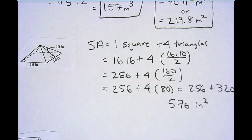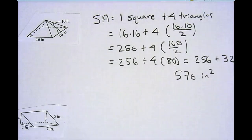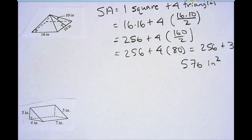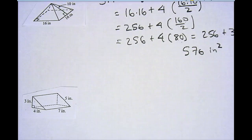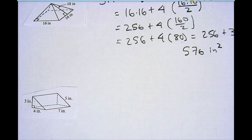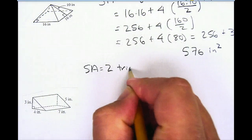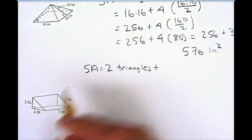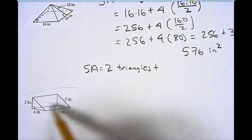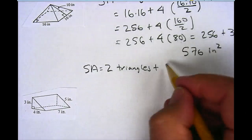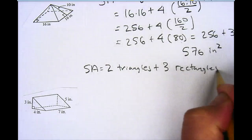I have one last shape to work on, and this shape is going to be a triangular prism. There's my triangular prism right there. There are two formulas for this. On a triangular prism, the base is going to be a triangle — that's why they call it a triangular prism. My triangle has a height of 3 and a base of 4. For the surface area, I have two triangles, plus I have one, two, three rectangles — one here, one there, one on the bottom, and one on the back. So I have three rectangles.